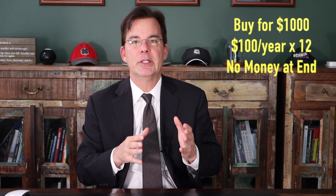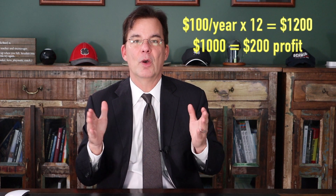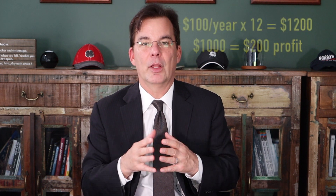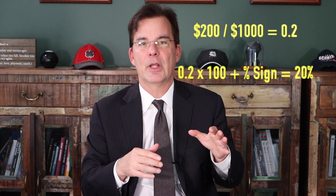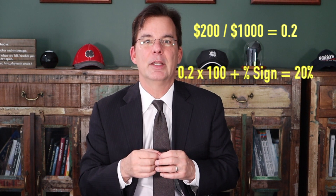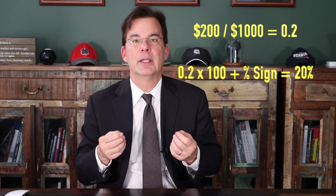Now let's talk about something a little more complicated: an annuity. Annuities generally have an upfront payment and cash flows over the life of the annuity, but you don't get any money back at the end. Let's say you bought an annuity for $1,000 and it guaranteed you $100 a year for the next 12 years. Your payments in would be $100 times 12, or $1,200. Your payment out was $1,000. Your profit is $200. You divide $200 by your initial $1,000 investment and get 0.2 — multiply by 100 and your ROI on the annuity is 20%.